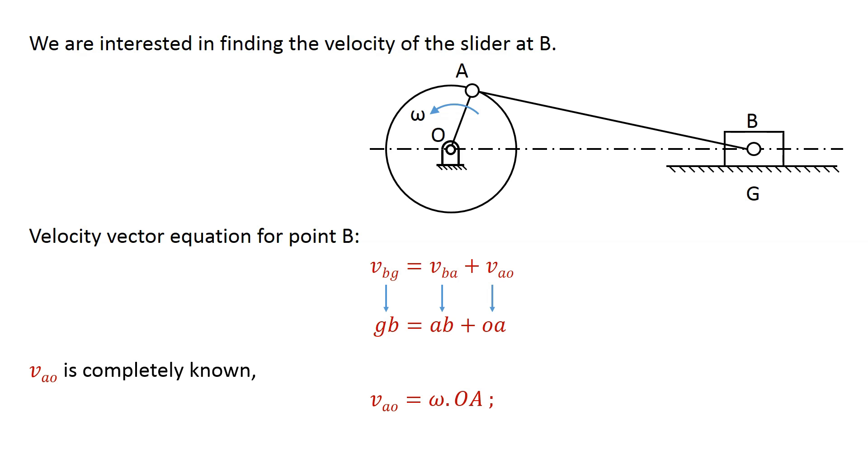Velocity of A relative to O equals omega times the length of the link OA. Its direction is perpendicular to OA. We draw its velocity vector equal to its magnitude omega times OA at some convenient scale, with its root at point O, and its direction perpendicular to the link OA.